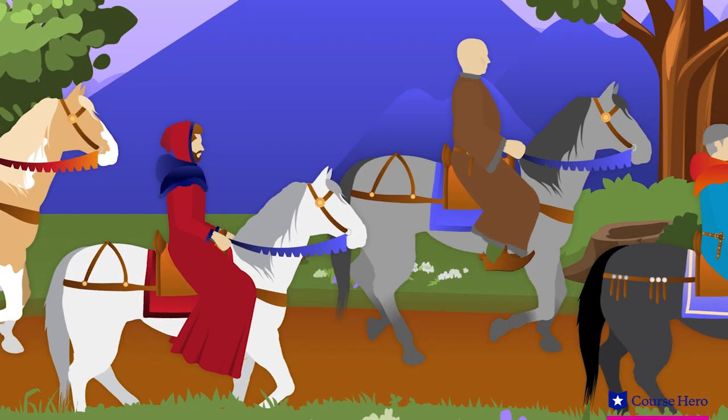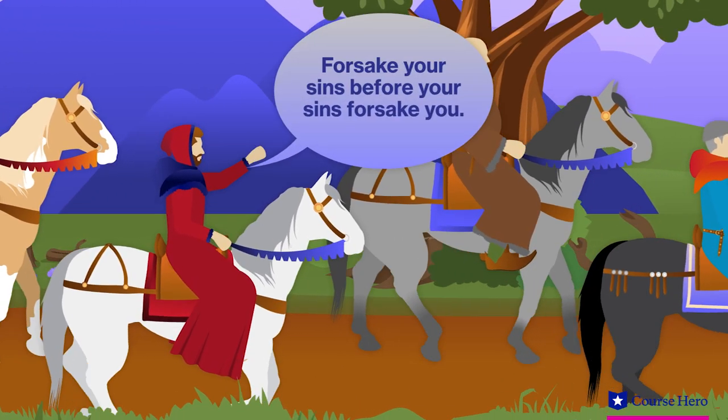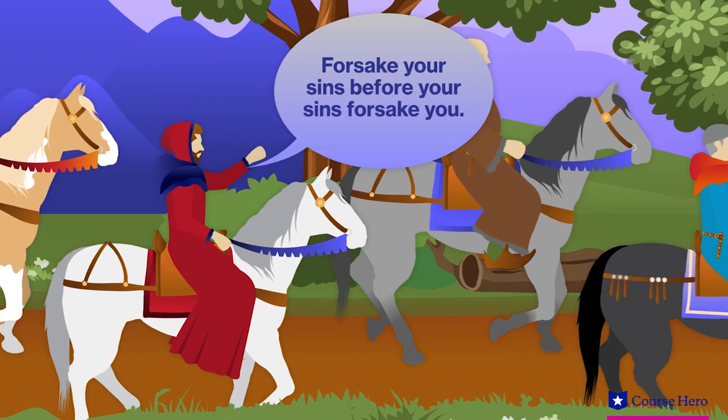The men of the town rise up and throw Appius into jail. They send Claudius into exile and hang anyone else who was involved in the plot. The physician ends by saying forsake your sins before your sins forsake you.